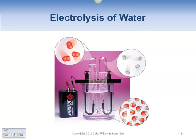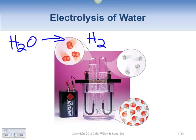Electrolysis of water: we're taking water and breaking it down into its constituent parts. The formula for this breakdown is water going into hydrogen gas and oxygen gas — balanced as 2H₂O → 2H₂ + O₂. To make that happen it takes energy, and that's where the electricity comes in. The picture shows electricity coming from a battery flowing into the water, and at two different locations it breaks down and you form hydrogen gas and oxygen gas.